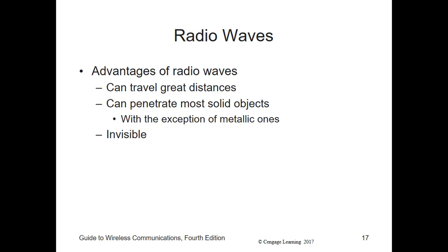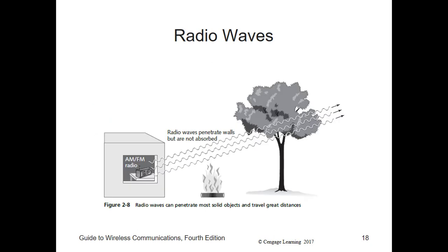Radio waves, like light and heat waves, are electromagnetic waves occurring in a particular range of frequencies. They move outward away from the wire much like waves when you throw a rock in a pond. Radio waves are free from some limitations that affect light — unlike heat waves, they can travel great distances and can penetrate most solid objects, with the exception of metallic ones, whereas light waves cannot penetrate opaque objects. Radio waves are invisible — you cannot see, feel, touch, or smell them.